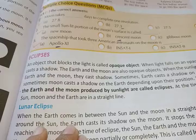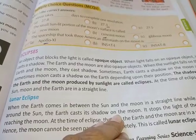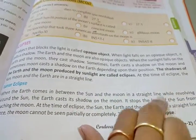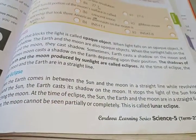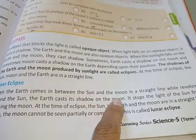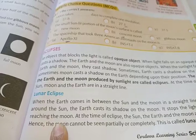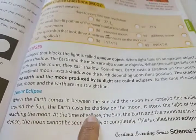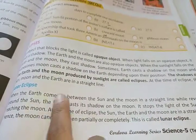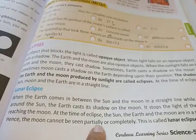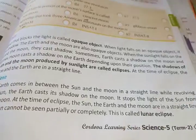Now, lunar eclipse: when the Earth comes in between the Sun and the Moon in a straight line while revolving around the Sun, the Earth casts a shadow on the Moon. It stops the sunlight from reaching the Moon. At the time of eclipse the Sun, Earth, and Moon are in a straight line. Hence the Moon cannot be seen partially or completely — this is called a lunar eclipse.